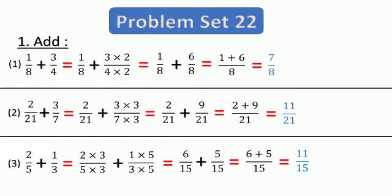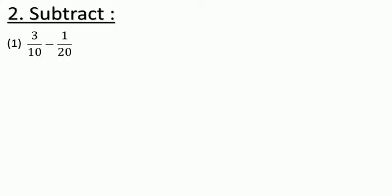In this way you solve question 1 — addition: first convert into like fractions, then add the numerators keeping the common denominator. Now let us study question number 2, which is subtract. First one: 3 upon 10 minus 1 upon 20. The denominators are not equal, so we convert them into like fractions.